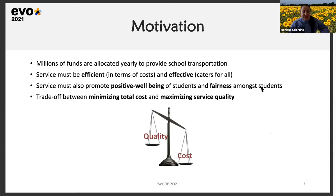In several countries around the world, millions of funds are allocated yearly to provide school transportation to students. The school bus routing problem deals with finding the optimal use of a fleet of vehicles to transport students to and from school in the morning or in the afternoon. Because of this, government administrators have to make sure that the service is efficient in terms of costs, and it must also guarantee that the service is effective and caters for the needs of all the students. Apart from that, we have to make sure that the service promotes positive well-being of students and fairness among students.